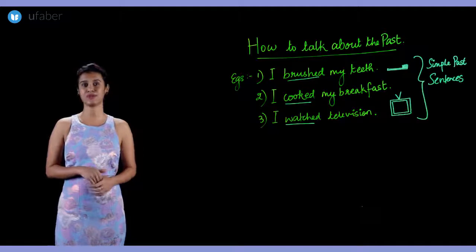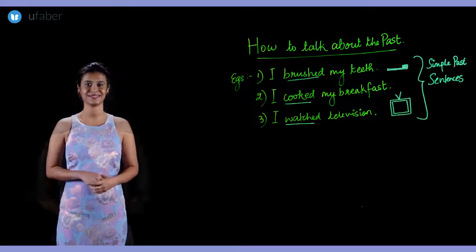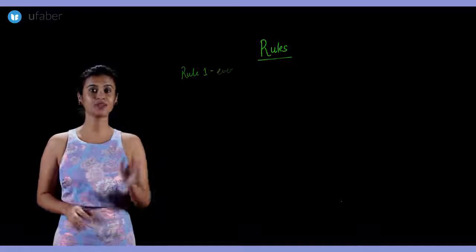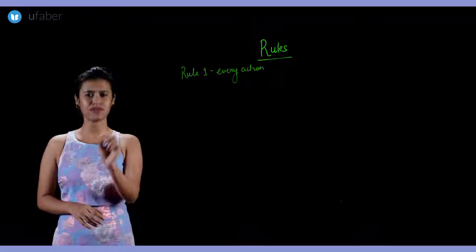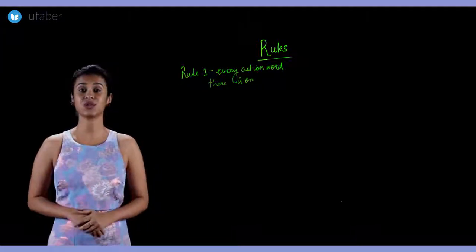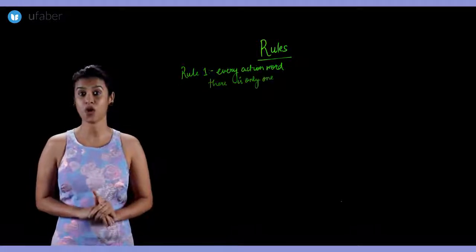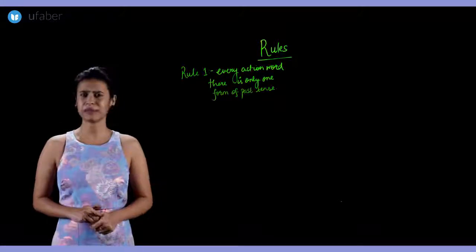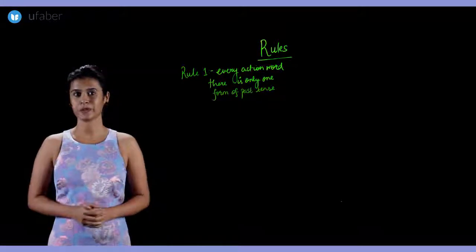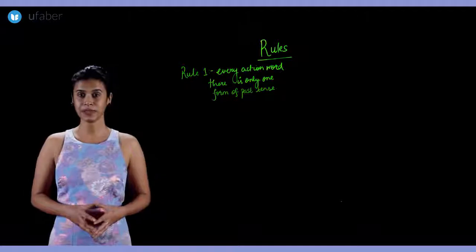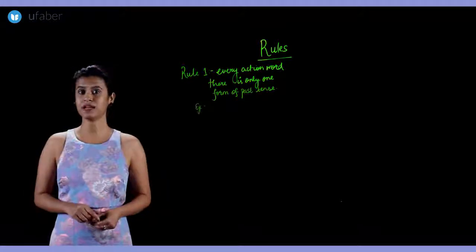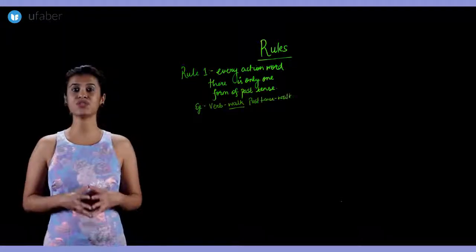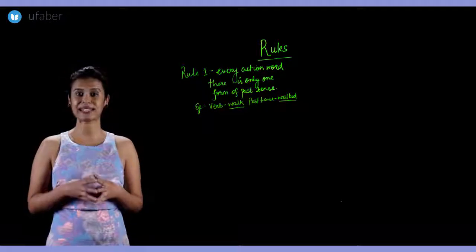Rule number one: the main rule is that for every action word in English there is only one form of it in the past tense. What do we mean by this? For example, the past tense of the verb 'walk' is 'walked'. 'Walked' is used as the past tense for all subjects or pronouns.